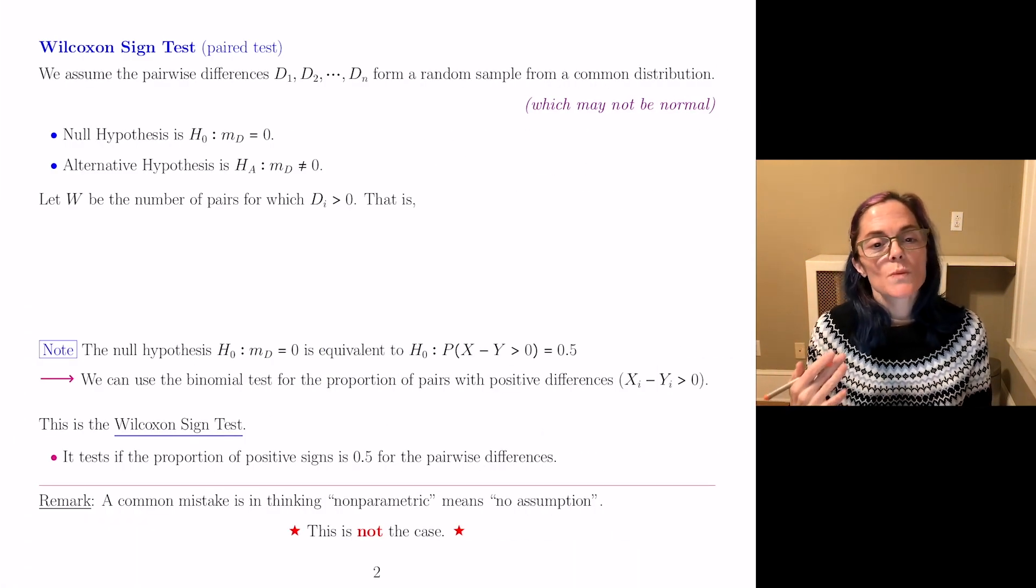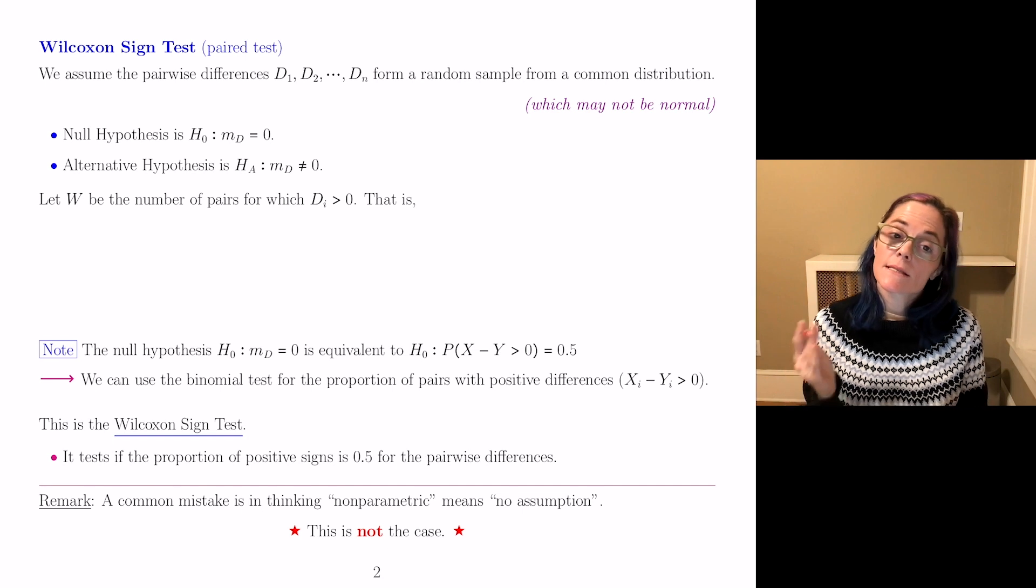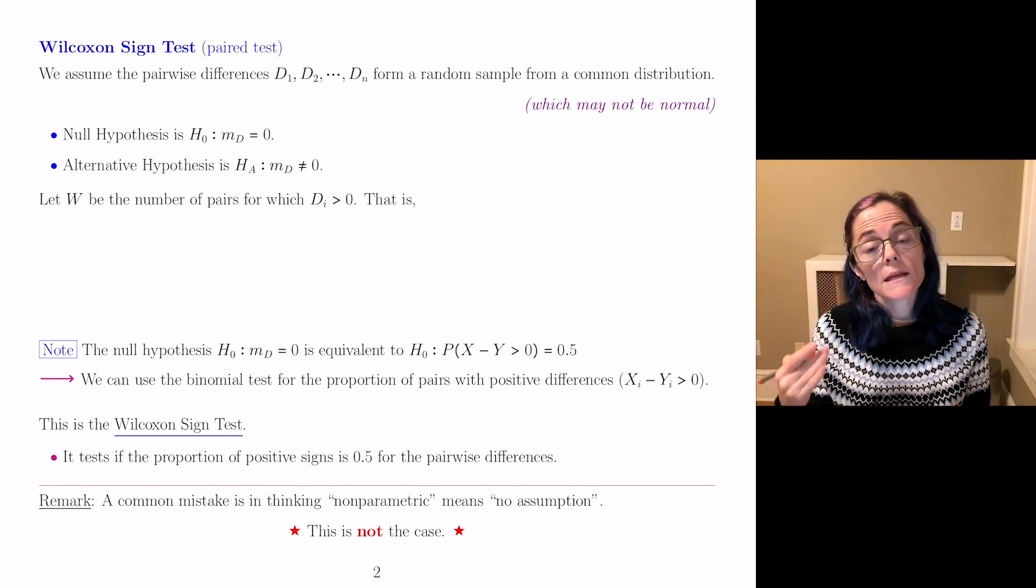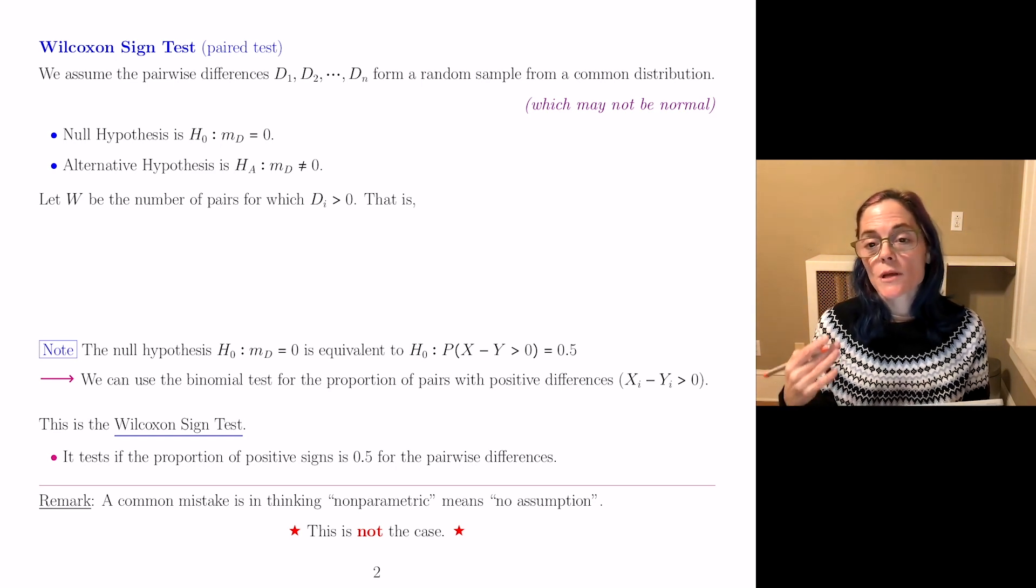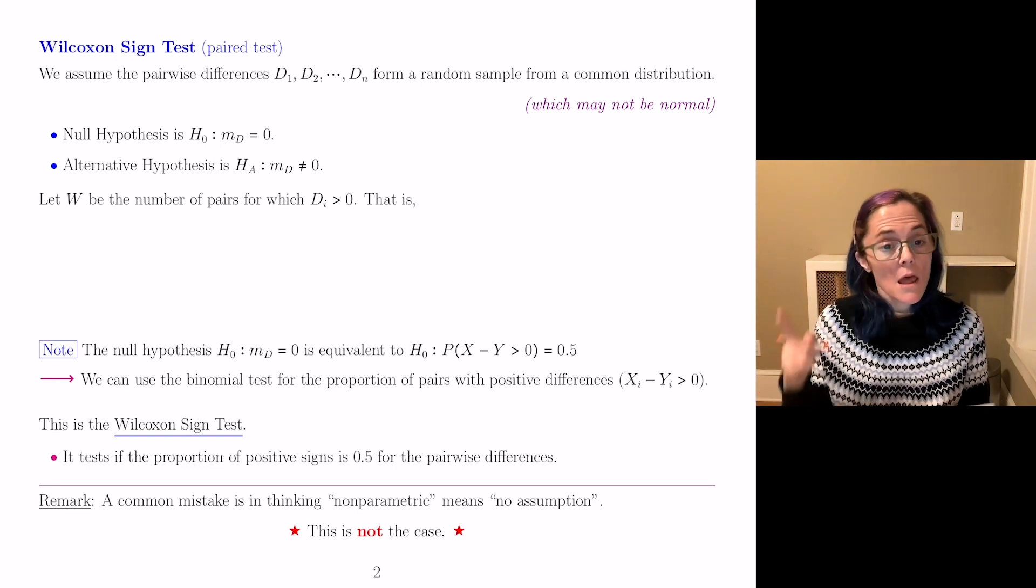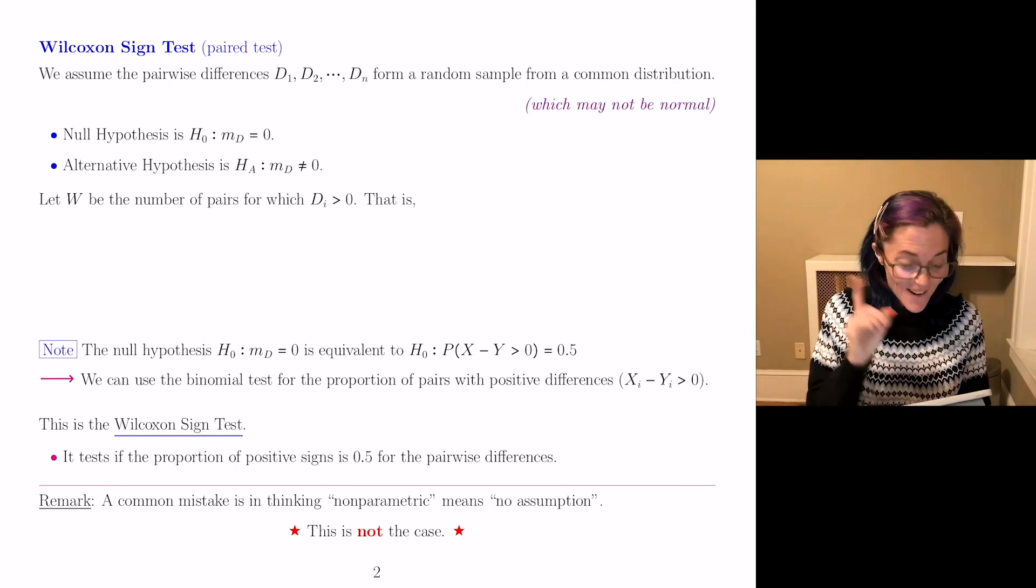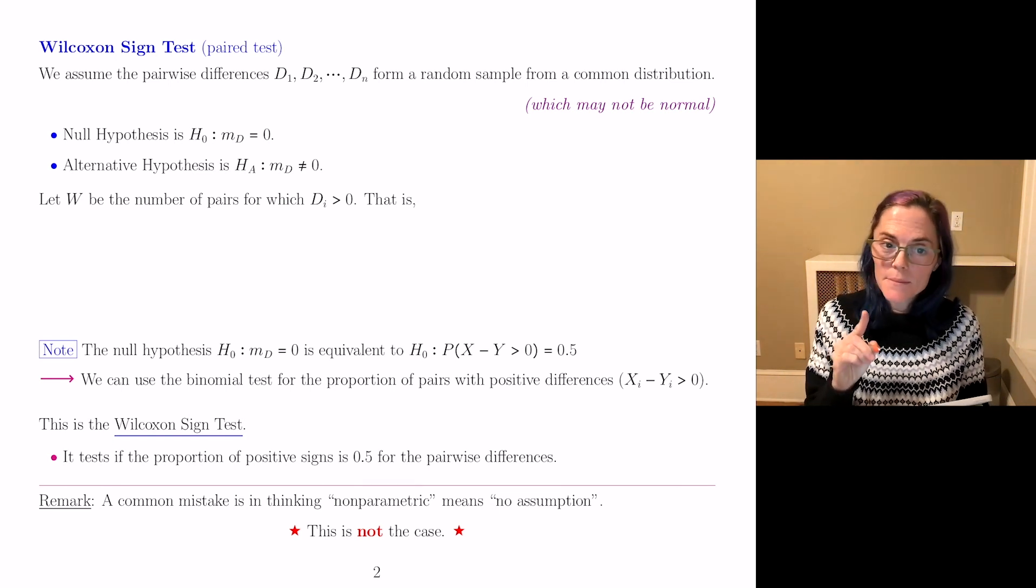we assume that pairwise differences D₁ through Dₙ form a random sample from a common distribution. However, this common distribution may not be normal. The null hypothesis is that Md is zero.